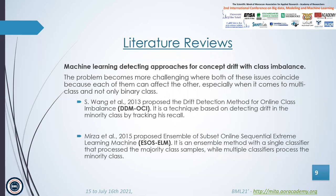Finally, I have concentrated on machine learning detection approaches for concept drift with class imbalance. The problem becomes more challenging when both of these issues coincide, because each can affect the other, especially in multi-class and not only binary class settings. One study proposed a drift detection method for online class imbalance, a technique based on detecting drifts in the minority class by tracking its recall. Another study proposed an ensemble of subsets online sequential extreme learning machine, an ensemble method with a single classifier processing the majority class samples while multiple classifiers process the minority class.